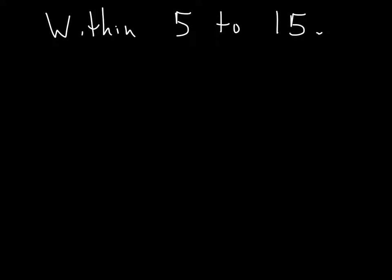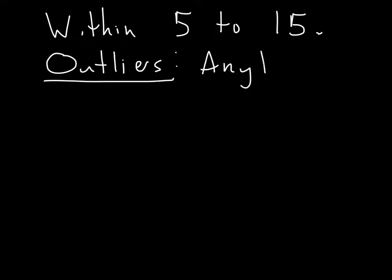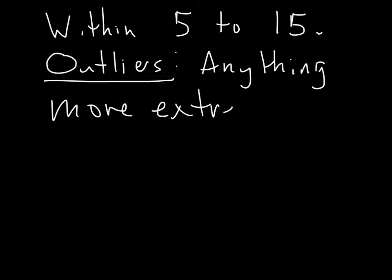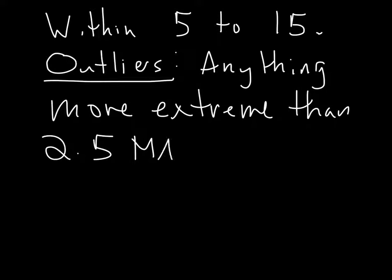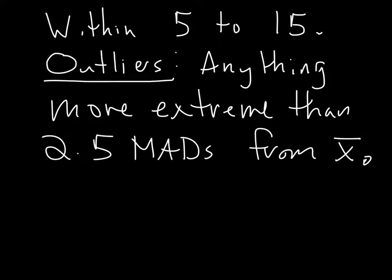So we're going to use that idea for an outlier. For outliers, we're going to say anything more extreme than 2.5 mean absolute deviations from our mean. That's how we're going to define an outlier. In the set we just saw, any number smaller than 5 or bigger than 15 we're going to call an outlier. So let's do an example and see how this looks.